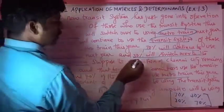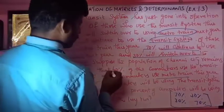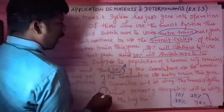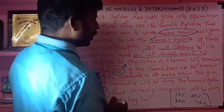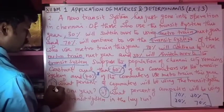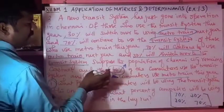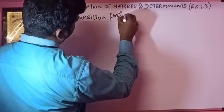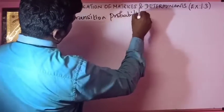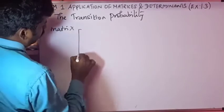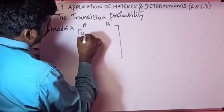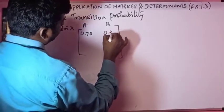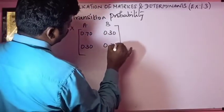The population of Chennai city remains constant. The percentage of commuters using the transit system is 60 percent and using the metro train is 40 percent this year. So the initial state vector is a = 0.60 and b = 0.40. The transition probability matrix is [[0.70, 0.30], [0.30, 0.70]].